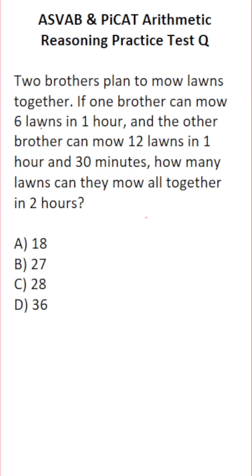This arithmetic reasoning practice test question for the ASVAB and PICAT says: Two brothers plan to mow lawns together. If one brother can mow six lawns in one hour and the other brother can mow 12 lawns in an hour and 30 minutes, how many lawns can they mow all together in two hours?